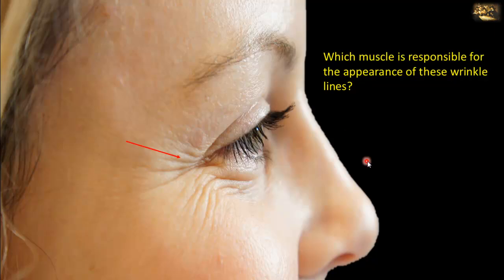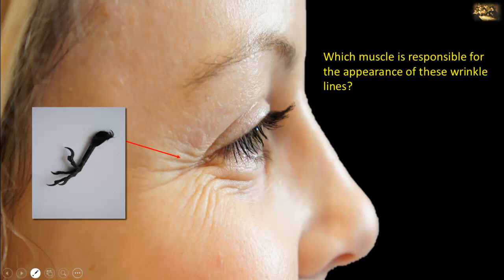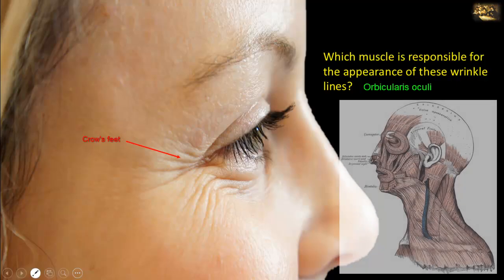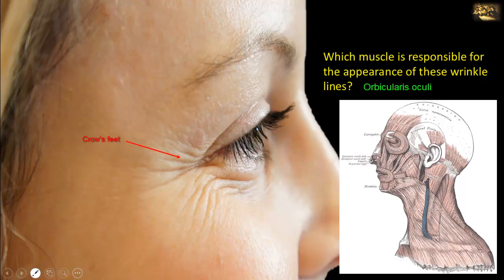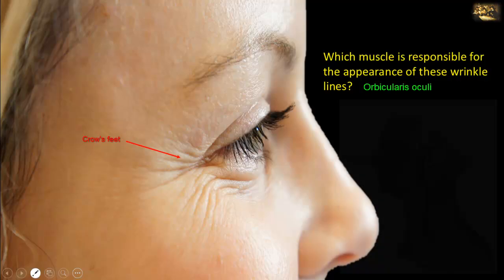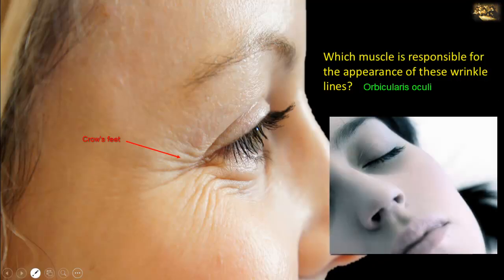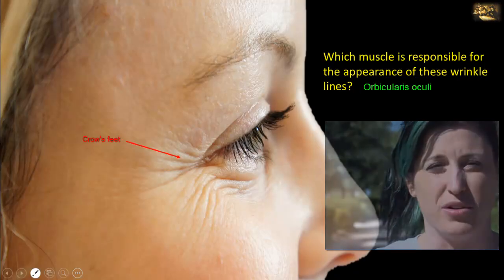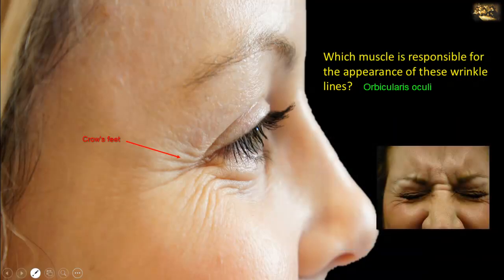Which muscle is responsible for the appearance of these wrinkle lines? These lines that form in the lateral canthal region are called crow's feet, and they are caused by contraction of the orbicularis oculi muscle. The orbicularis oculi is the sphincter mechanism located around the orbit, consisting of concentric loops of muscle fibers surrounding the orbit and located in the eyelid. The palpebral part closes the eyes gently, as in sleep or blinking, while the orbital part lowers the eyebrows to shade the eye from bright light. Both parts acting together close the eye forcibly, as during a dust storm.